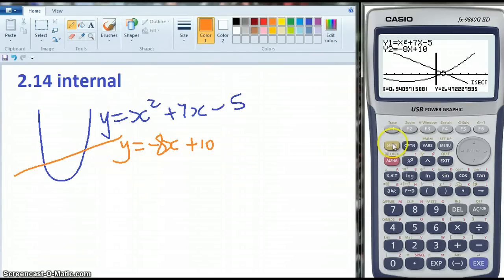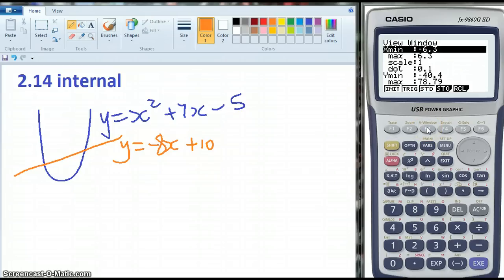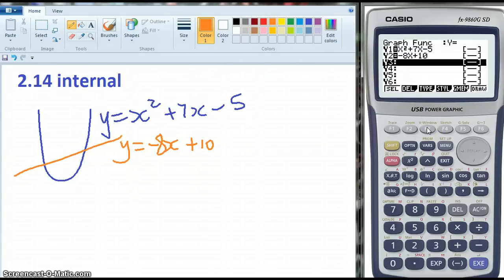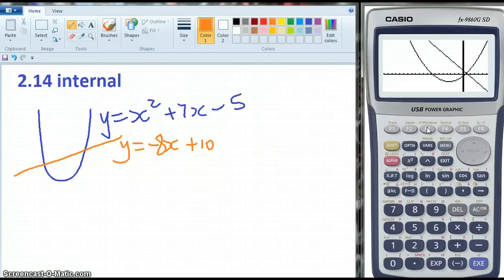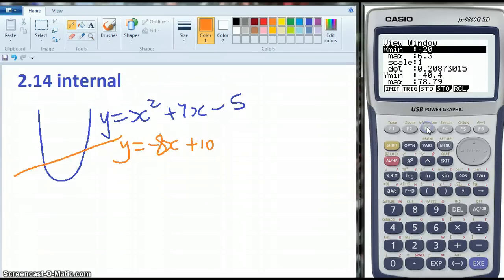So I'm going to go shift view window, and I'm manually going to think, oh, I'll just go negative 20. I've no idea. Does that help me at all? No. View window. My Y max. I'm going to go like 300.